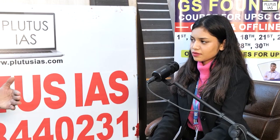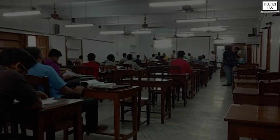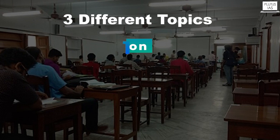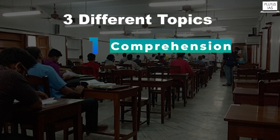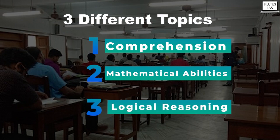Going to the objectives and the type of questions asked in the CSAT examination, there are three different topics that are generally covered. The first one is comprehension. The second one is mathematical abilities and mathematical problems. And the third one is logical reasoning.